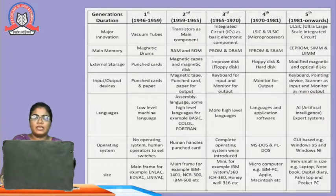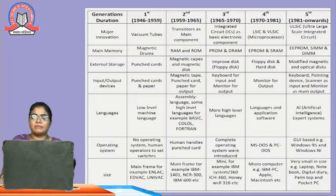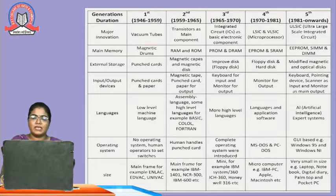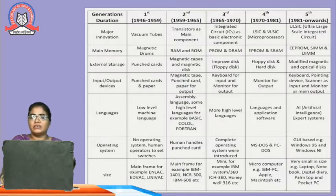In the fourth generation, LSIC and VLSIC microprocessors and integrated circuits were used. EPROM and SRAM were introduced. Floppy disk and hard disk were used. Monitor for output was introduced, and application software started being used in this generation. The disk operating system — MS-DOS and PC-DOS — was used as the operating system. Examples include IBM PC, Apple Mac, and Intosh computers.